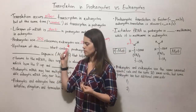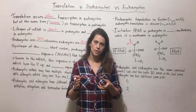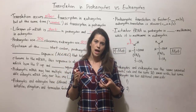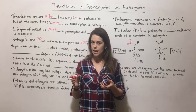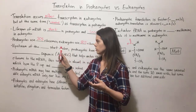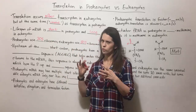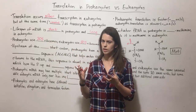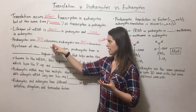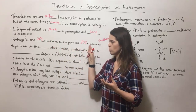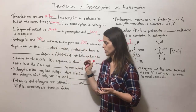Remember that ribosomes are composed of protein subunits and also ribosomal RNA. So not only are these sizes different, but the actual ribosomal proteins and ribosomal RNA that make up these ribosomes are different in prokaryotes versus eukaryotes.